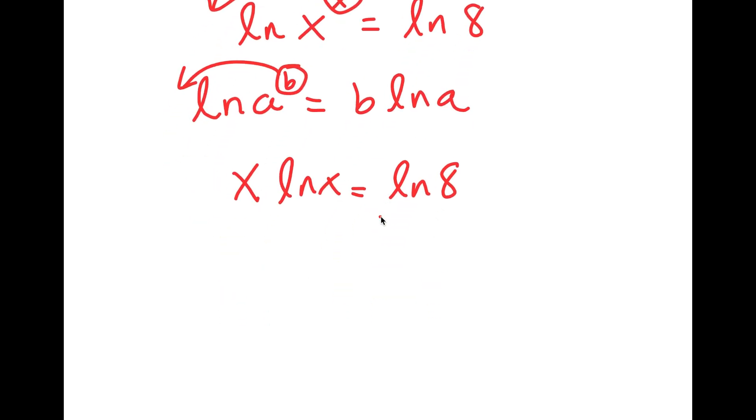Now from here, I'm going to use another formula that states that if I have something in the form W of a times e to the power of a, this is equal to a. And this is something known as the W Lambert formula. So if I take the W of something in the form a times e to the power of a, it's going to equal a.